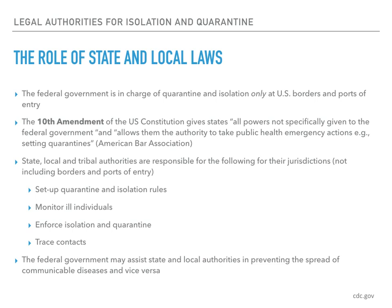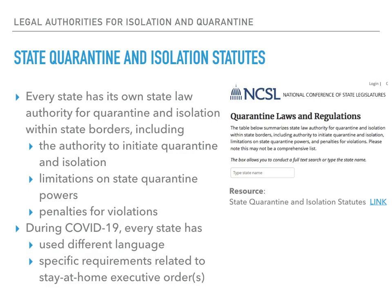States have police power functions to protect the health, safety, and welfare of persons within their borders, and also have laws to enforce the use of isolation and quarantine. The National Conference of State Legislatures, the NCSL, is an association of non-partisan public officials composed of sitting state legislators. Their mission is to advance the effectiveness, independence, and integrity of legislators, and to foster interstate cooperation and facilitate exchange of information on matters such as public health management. You can visit their site to find a table summarizing state law authority for quarantine and isolation within state borders, including the authority to initiate quarantine, limitations on state quarantine powers, and penalties for violations. Every state has its own laws and regulations.